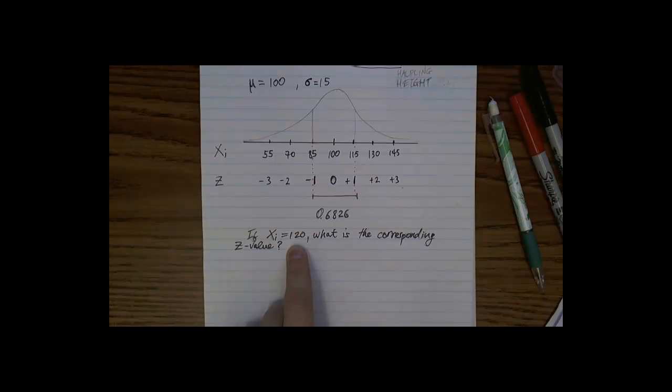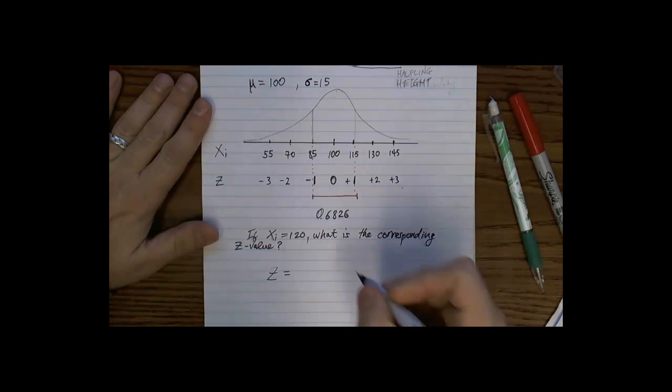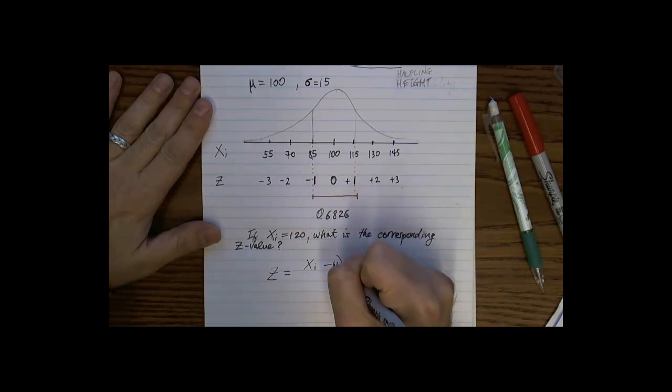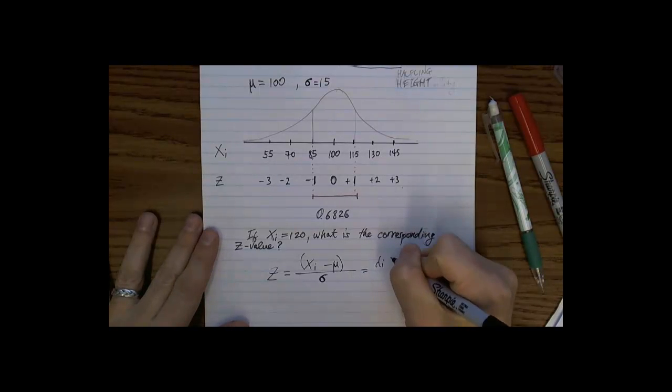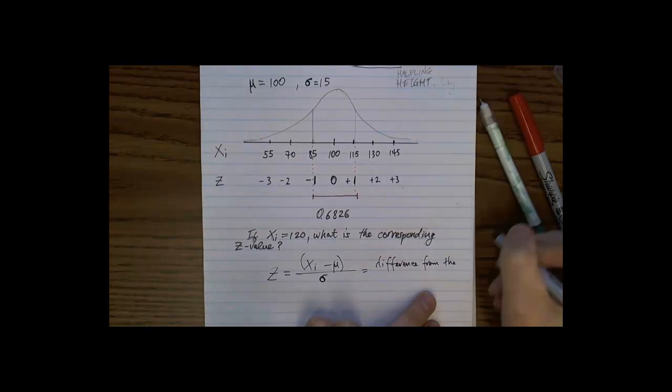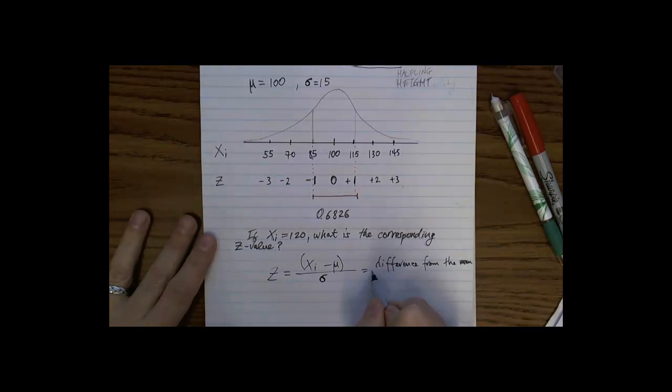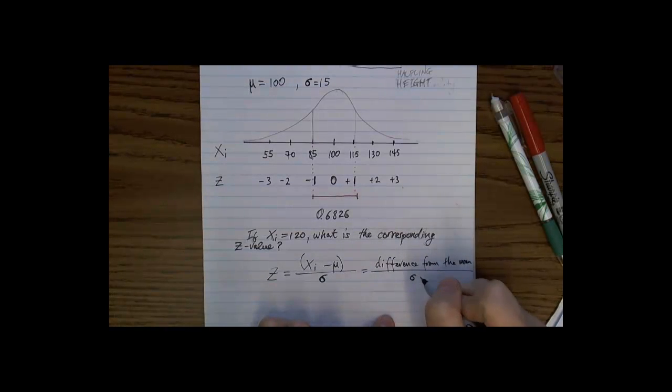We've got this observation, so 120 centimeters, we've got a halfling that's 120 centimeters tall, and we want to know what is the corresponding Z value. The way we would do this is we would break out this nifty formula. So general form looks like this. You can think of that as the difference from the mean, and it could be a positive difference, meaning it would be over here, so that actually this number is bigger than the mean, or it could be a negative difference, which means that this number is smaller than the mean, right? And then divide that by the standard deviation.